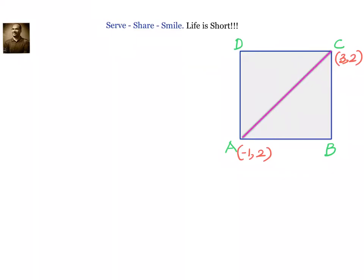Hello friends, welcome back! Hearty welcome to you. Let us look at this problem related to coordinate geometry — distance between two points or straight lines. We have been given a square ABCD and we know the opposite vertices A and C. Their coordinates are (-1, 2) and (3, 2). We have to find out the remaining two vertices of the square. We'll solve it using 10th grade concepts combined with properties of a square.